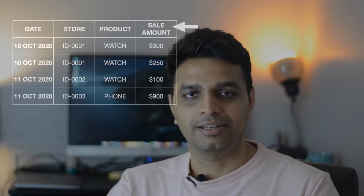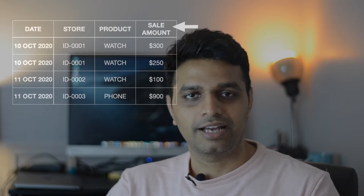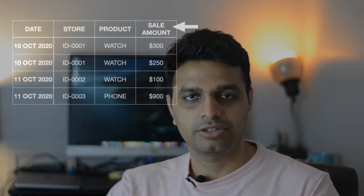A simple example for additive facts is sales data. If you have a fact table which has date, store, product, and sale amount, then the sale amount is an additive fact. You can apply all sorts of aggregate functions on the sale amount and the result will be a valid one — that makes sense. You can apply average and any of the aggregate functions.